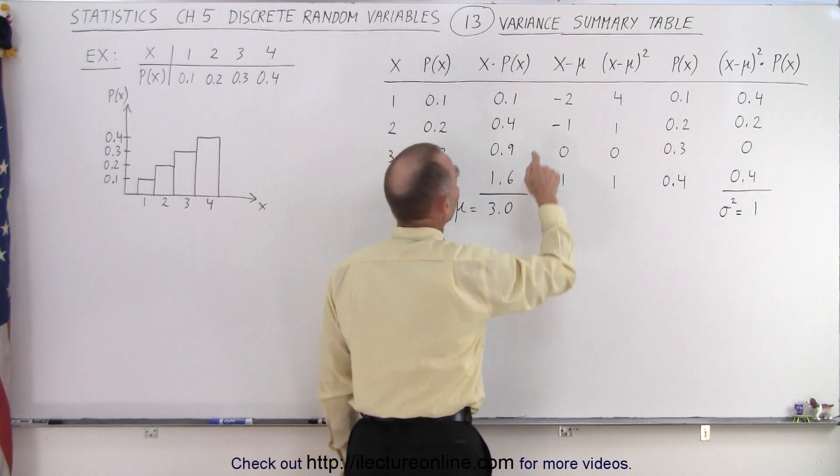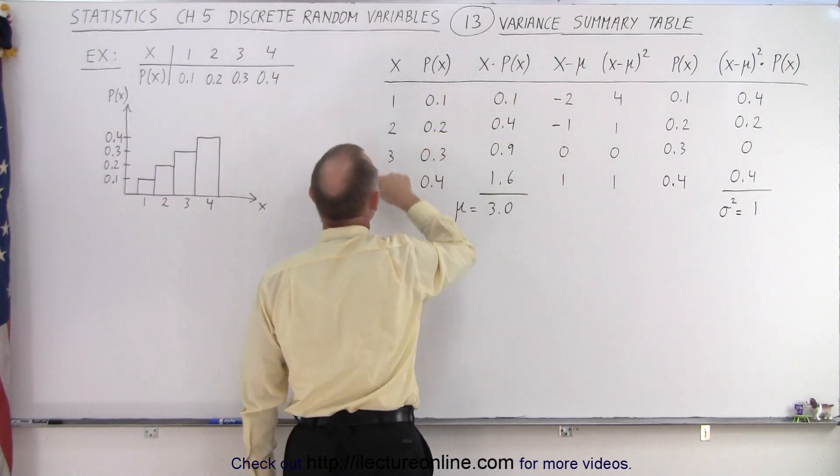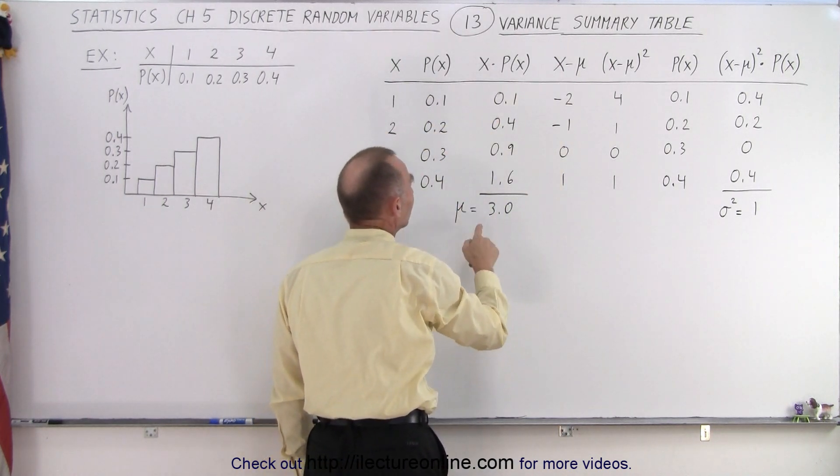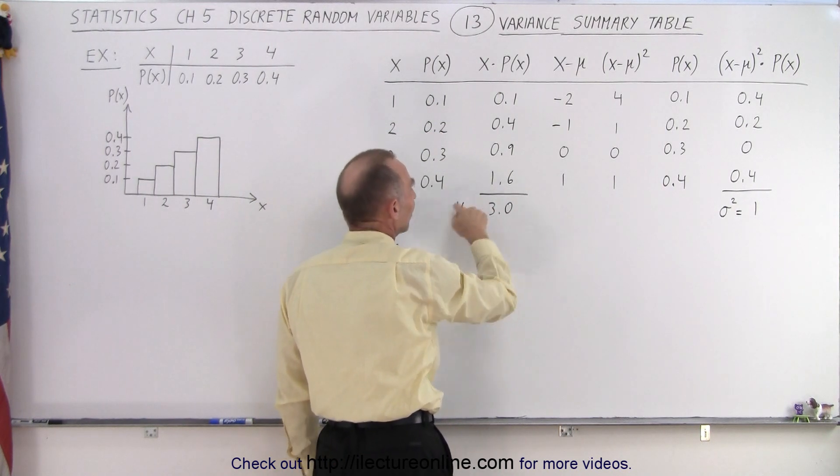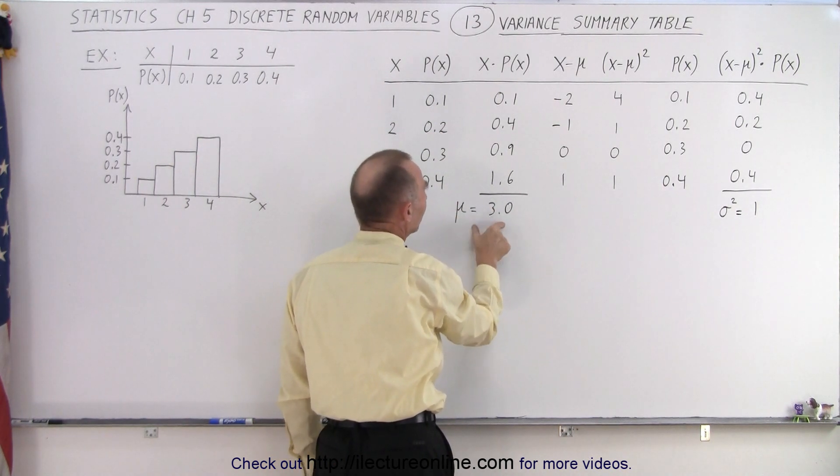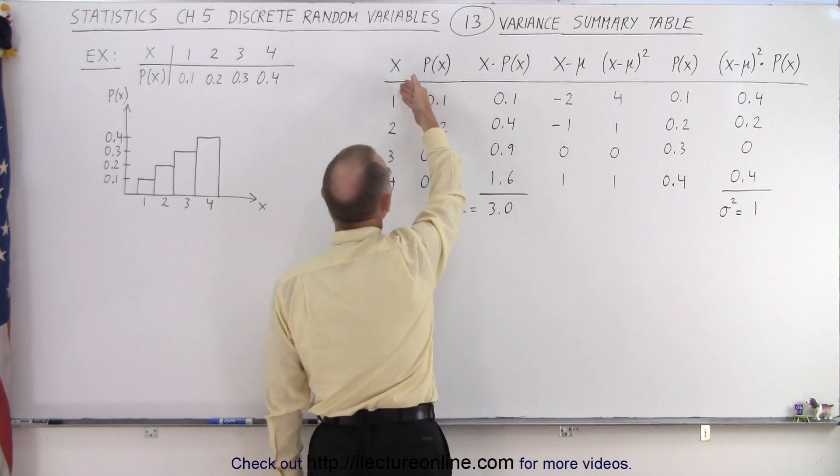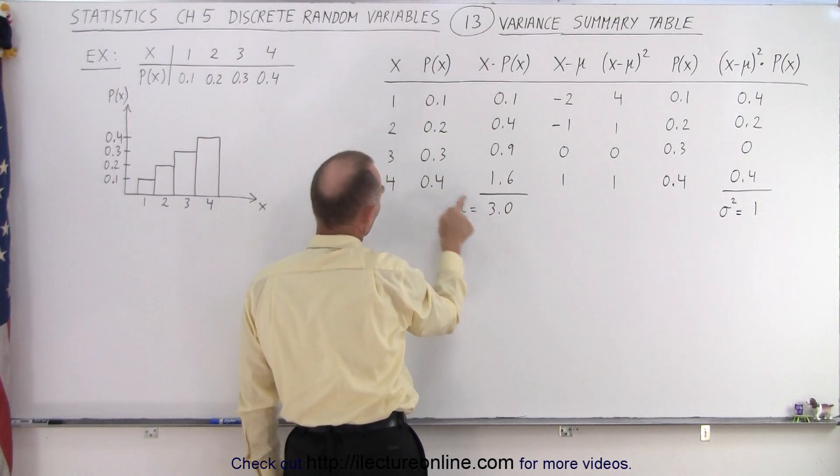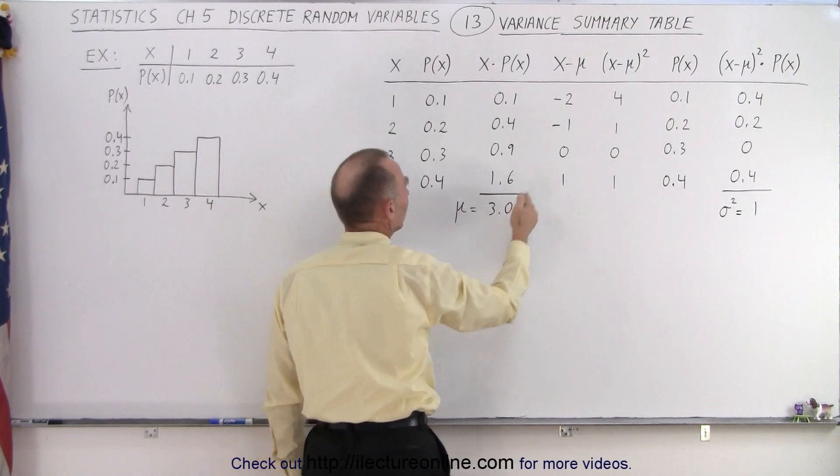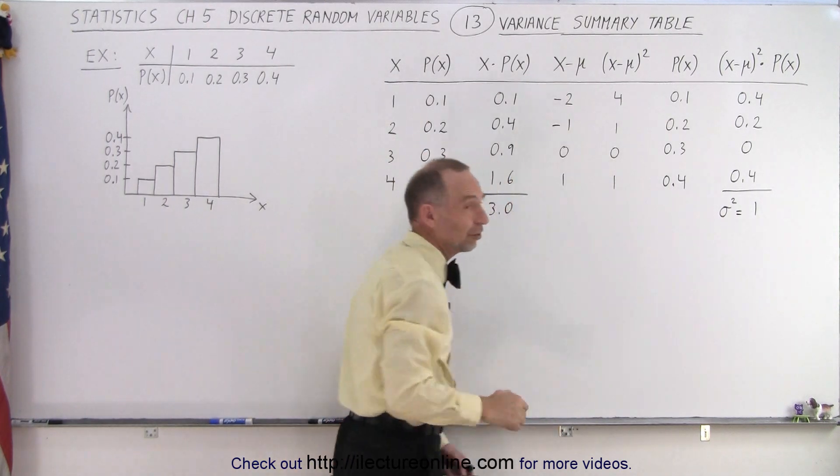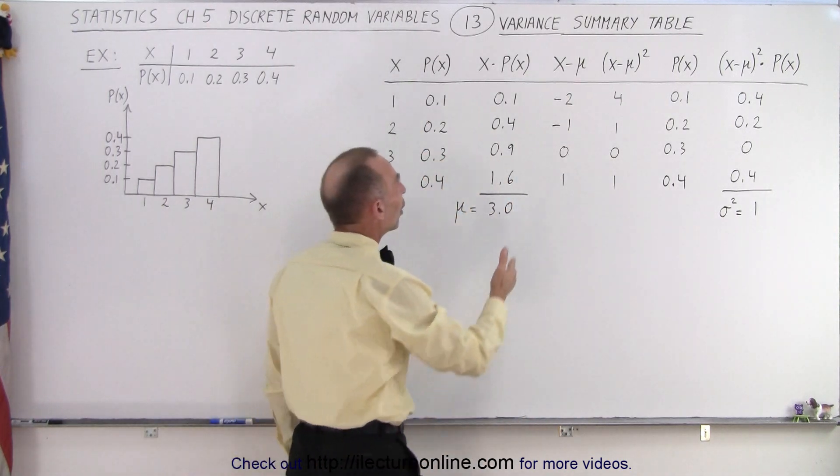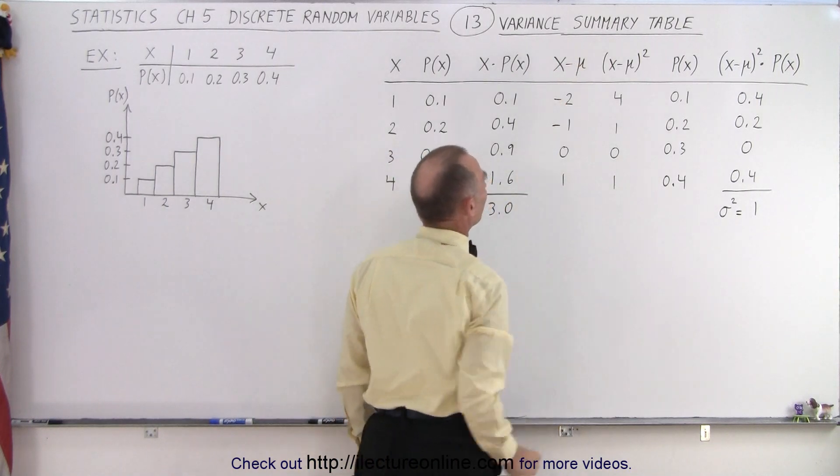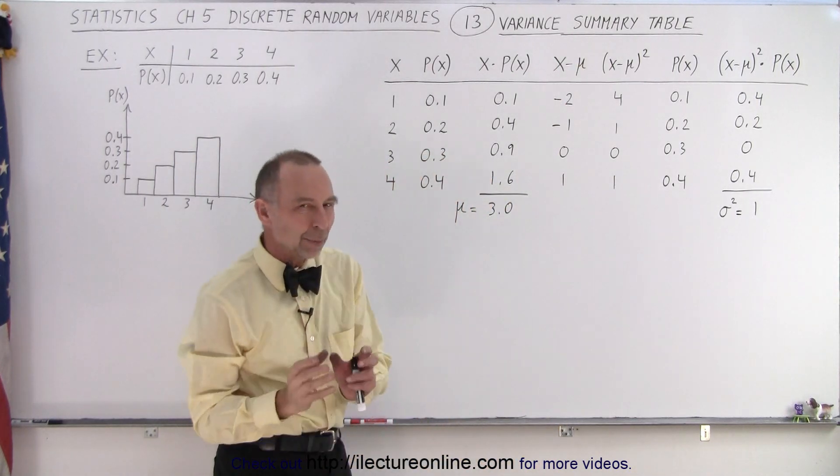Then we subtract the mean of the probability distribution from each of the four values that x can be. So 1 minus 3, 2 minus 3, 3 minus 3, and 4 minus 3. And so we get these values. This is simply the difference between all the possible values of x and the mean of the probability distribution.